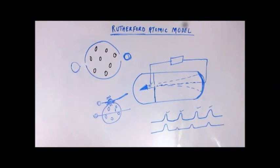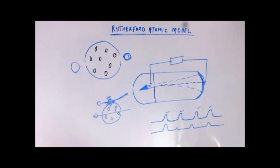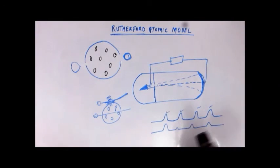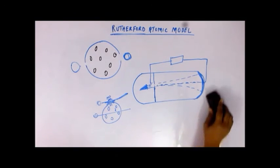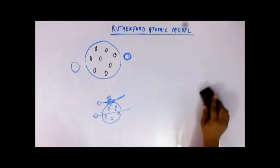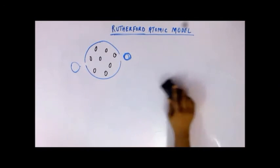Rutherford asked the team to perform yet another experiment to find the maximum amount of deviation that can happen, which was not determinable from the current setup. They then formed a new experimental setup to observe and measure the maximum deviation that could occur.